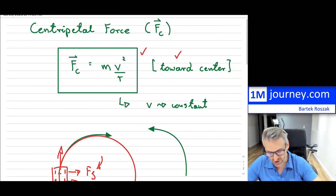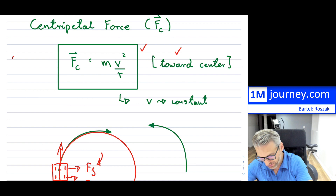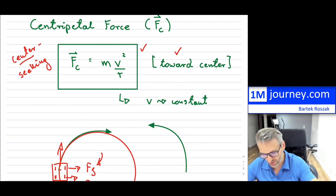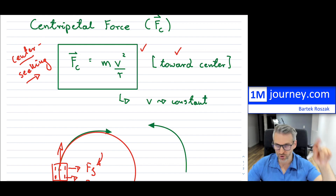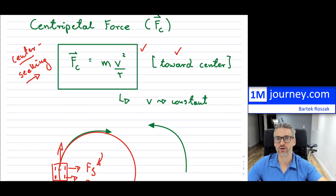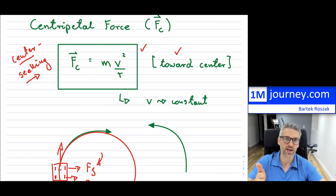One more thing worth mentioning: the word 'centripetal' has a meaning — I believe it's Latin for 'center seeking.' It's center seeking because it's always directed toward the center, trying to keep the object on its circular path. This applies to roller coasters, cars, a ball being spun on a string or rope — anything that's turning or changing direction. Even when we're walking and turning, the friction from our sneakers keeps us from slipping and provides that center-seeking force.